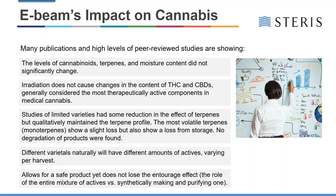Many publications and high-level peer-reviewed studies are showing that levels of cannabinoids, terpenes, and moisture content do not change significantly with irradiation. Irradiation does not cause changes in the content of THCs or CBDs, generally considered to be the most therapeutically active compounds in medical cannabis. Studies of limited varieties had some reduction in the effects of terpenes, but qualitatively they remain with the same profile as before. The most volatile terpenes — the monoterpenes — show a slight loss, but they also show that slight loss even on storage, indicating it's simply due to volatility.